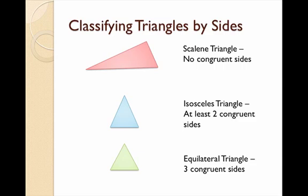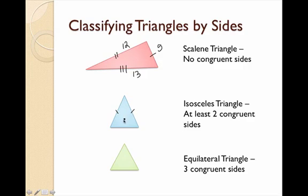The first type of triangle is a scalene triangle. This is a triangle that does not have any congruent sides, so all sides are going to be different lengths. For example, the sides could have lengths of 5, 12, and 13. Our next type is an isosceles triangle, which by definition has at least two congruent sides — for example, 5, 5, and 4. Our next type, the equilateral triangle, has all three sides congruent — they are all the same exact length.